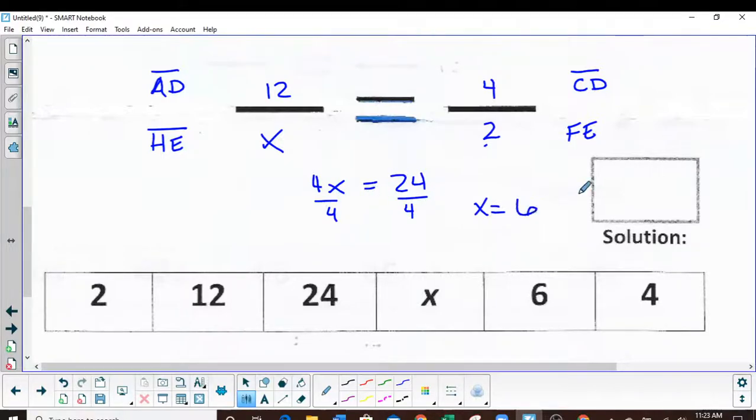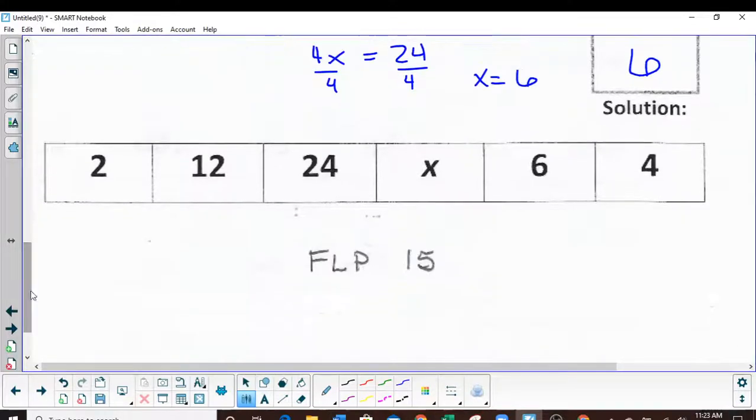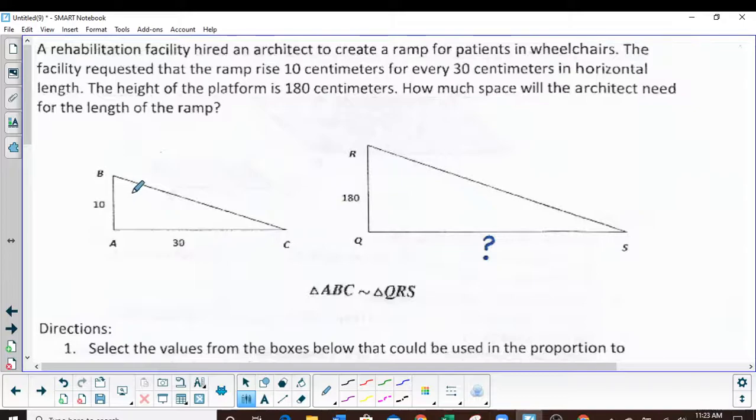And then I'm dividing by 4 and my x is equal to 6. So my solution would be 6. Cool, that was FLP 15. Let's jump over to 16 real quick. Okay.